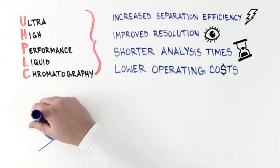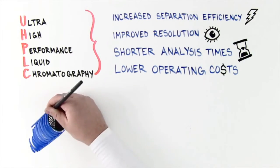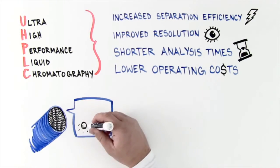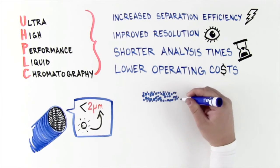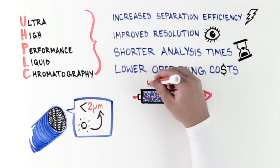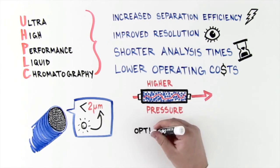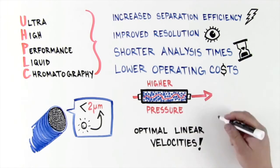It does this by using HPLC columns with mean particle size diameters less than 2 microns, along with new commercially available instrumentation capable of driving the eluent through the columns at subsequently higher pressure. This allows optimal linear velocities to be reached for smaller particle size columns.